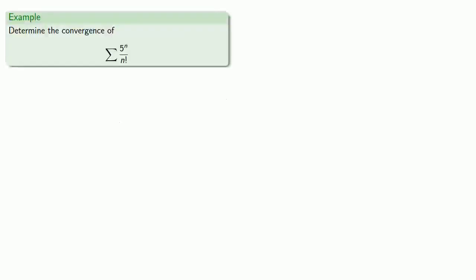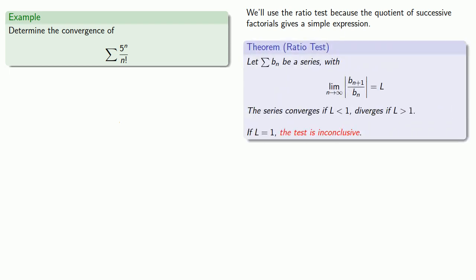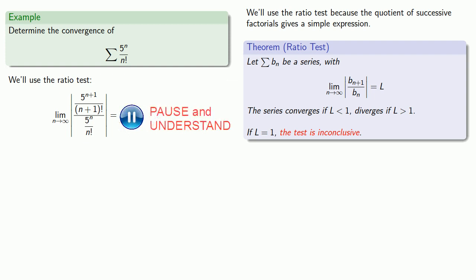Let's try to determine the convergence or divergence of the series 5 to the n over n factorial. We'll use the ratio test because the quotient of successive factorials gives a simple expression. So we want to find the ratio between one term, 5 to the n over n factorial, and the next term, 5 to the n plus 1 over (n plus 1) factorial. For any positive whole number value of n, all terms are positive, so we can drop the absolute value operators and simplify our expression.